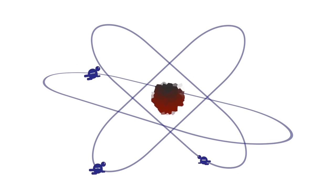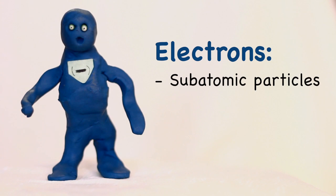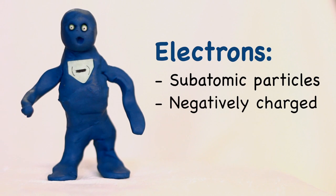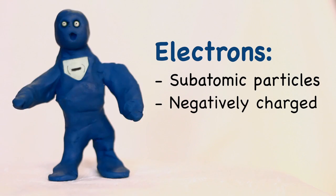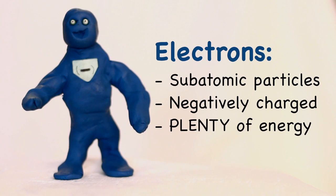Here's an atom. See those little fellows moving around? Those are electrons. Let's take a closer look at them. Electrons are subatomic particles that have a negative charge. This means that an electron is a very small thing that has plenty of energy. They are everywhere.